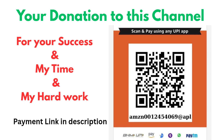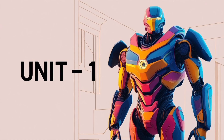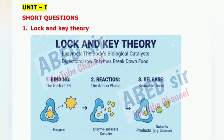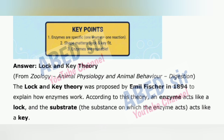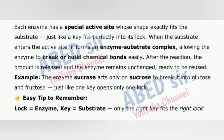Let's begin with a quick revision. Unit 1, First Important Short Question: Lock and Key Theory. The lock and key theory was proposed by Emil Fischer in 1894 to explain how enzymes work. According to this theory, an enzyme acts like a lock and the substrate — the substance on which the enzyme acts — acts like a key. Each enzyme has a special active site whose shape exactly fits the substrate, just like a key fits perfectly into its lock.